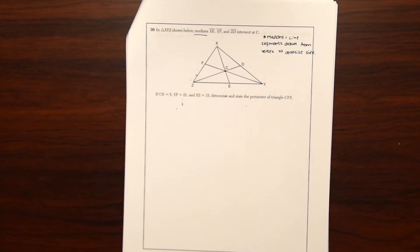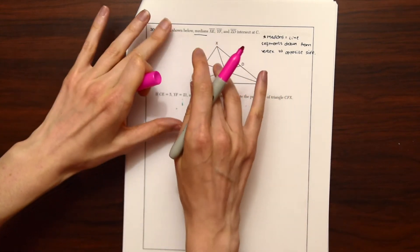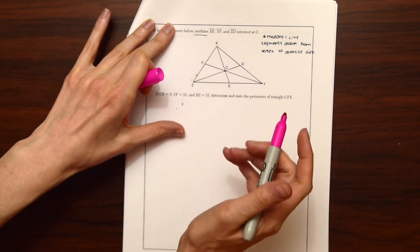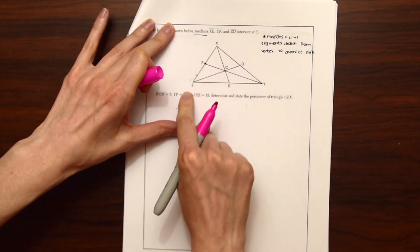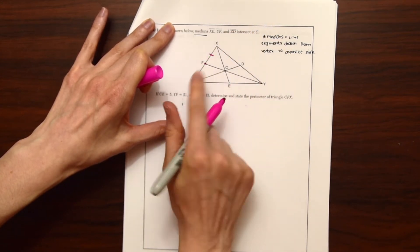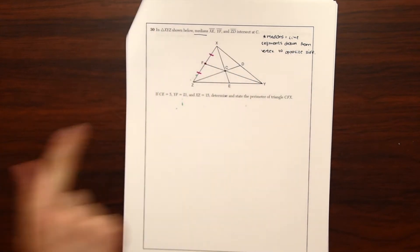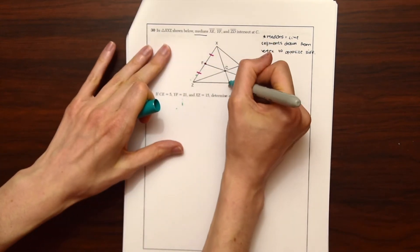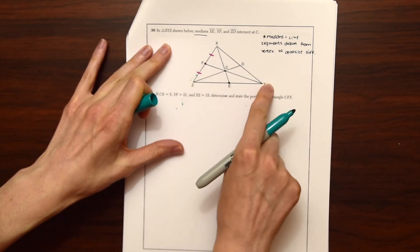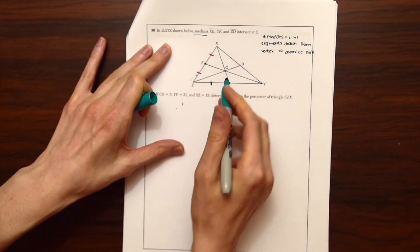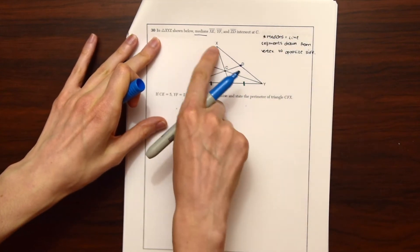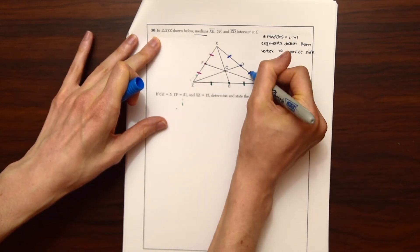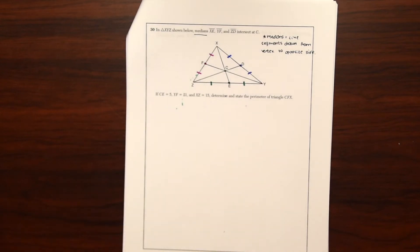So based on that we can notice that each side of this triangle are going to be equal. So F is a midpoint of XZ, meaning FX is going to be equal to FZ. Point E is the midpoint of ZY meaning that ZE is equal to EY. And lastly point D is the midpoint of XY, so XD is equal to DY.